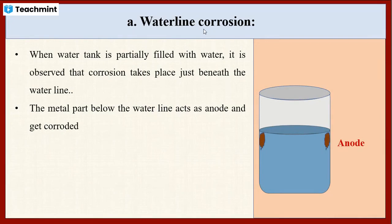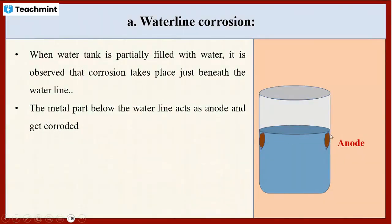Why does corrosion take place just below the waterline? This is because just below the waterline, the part of the metal is exposed to a lesser concentration of oxygen — that means this part is less aerated, hence this portion acts as the anode and corrosion takes place in this region. Above the waterline, the metal part is exposed to a higher concentration of oxygen, meaning it is highly aerated, so it acts as the cathode and is completely unaffected by corrosion.